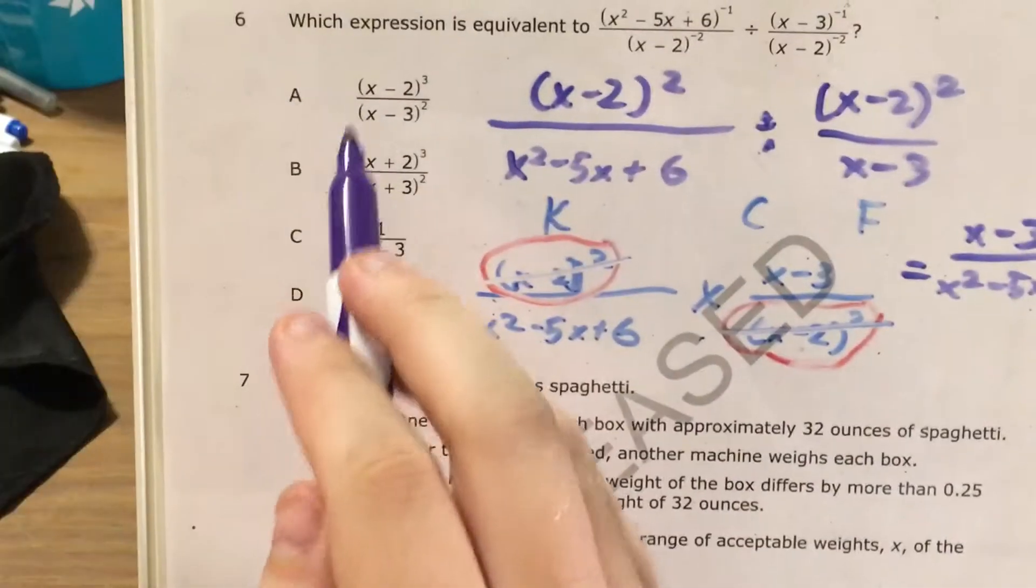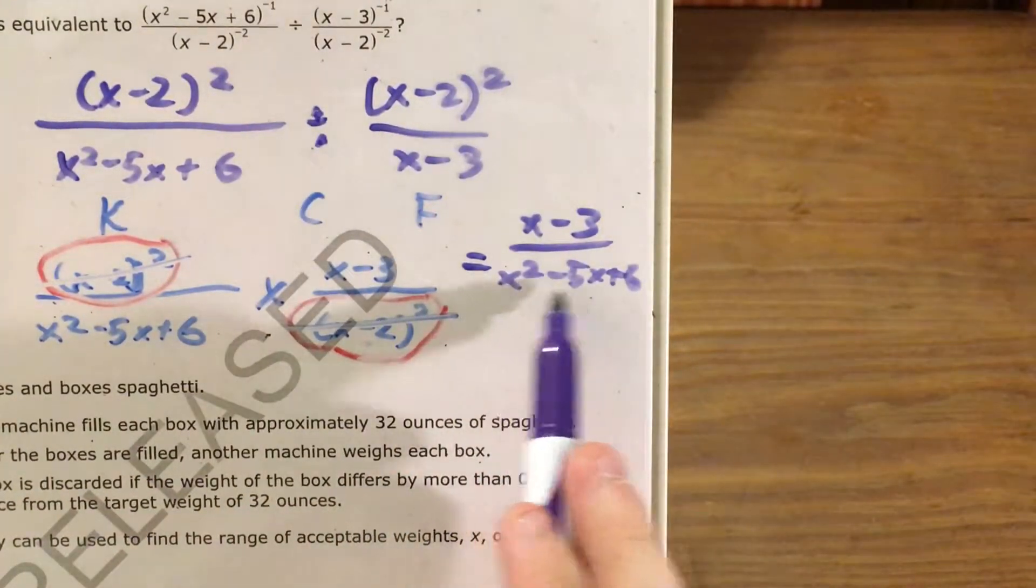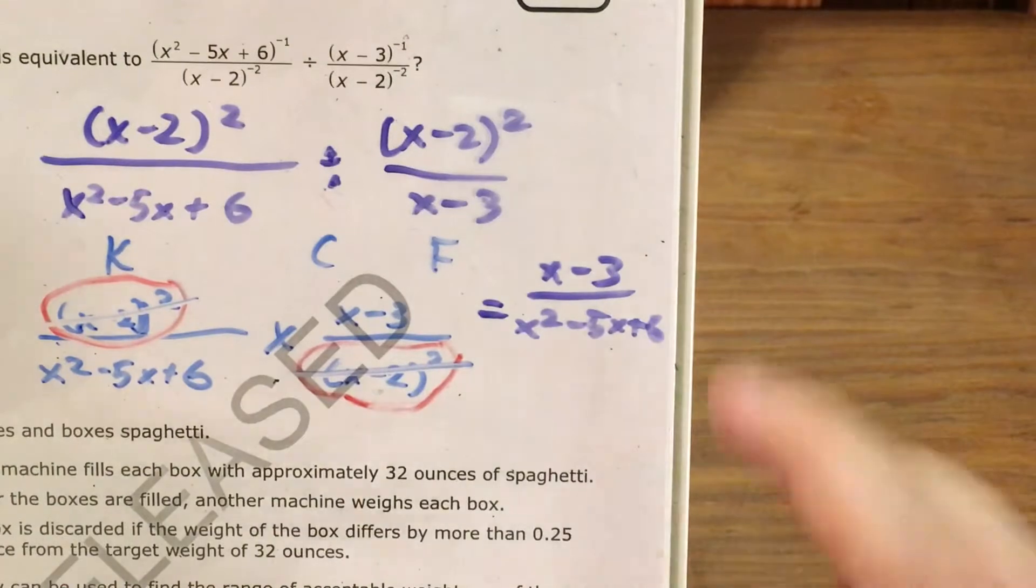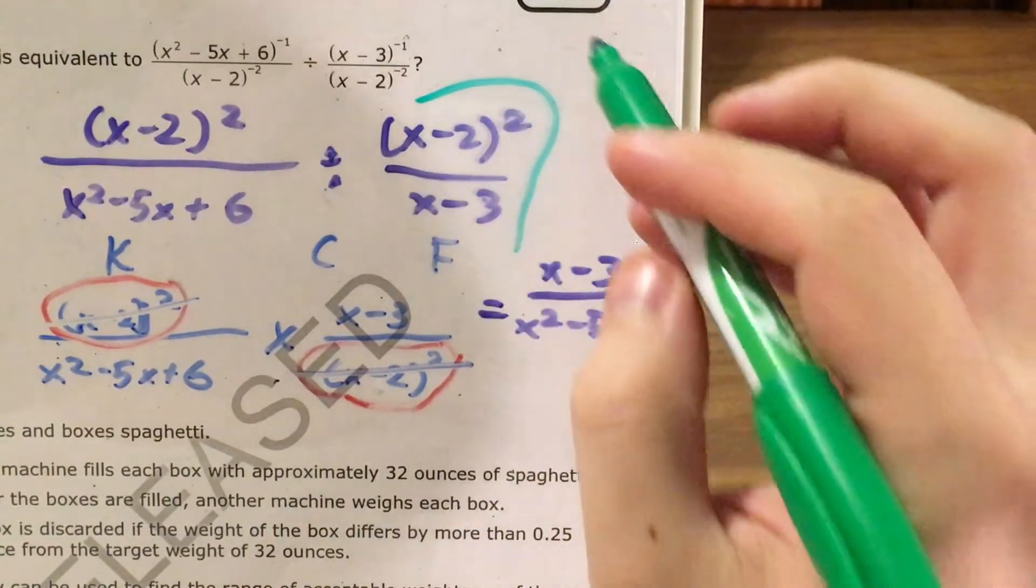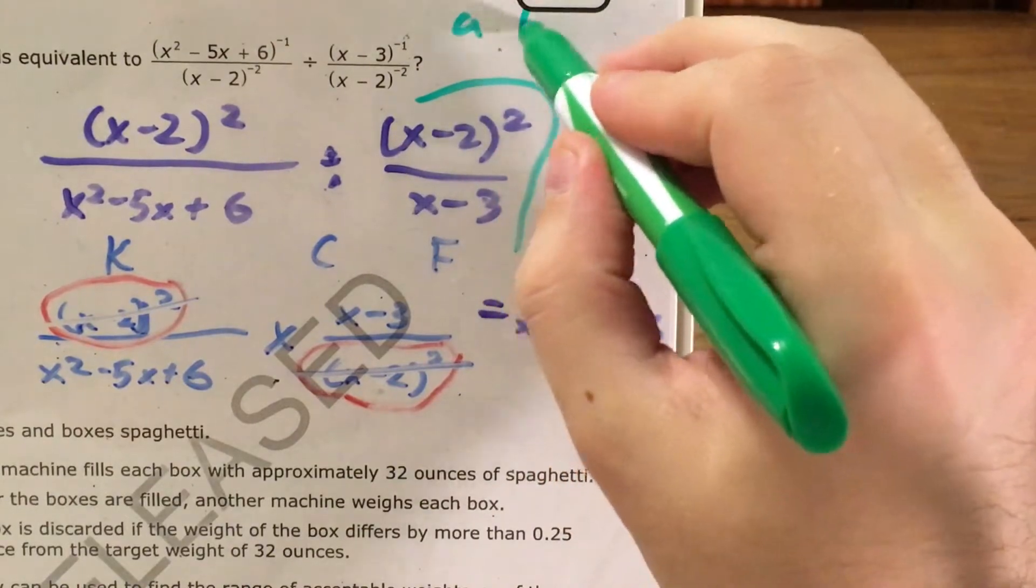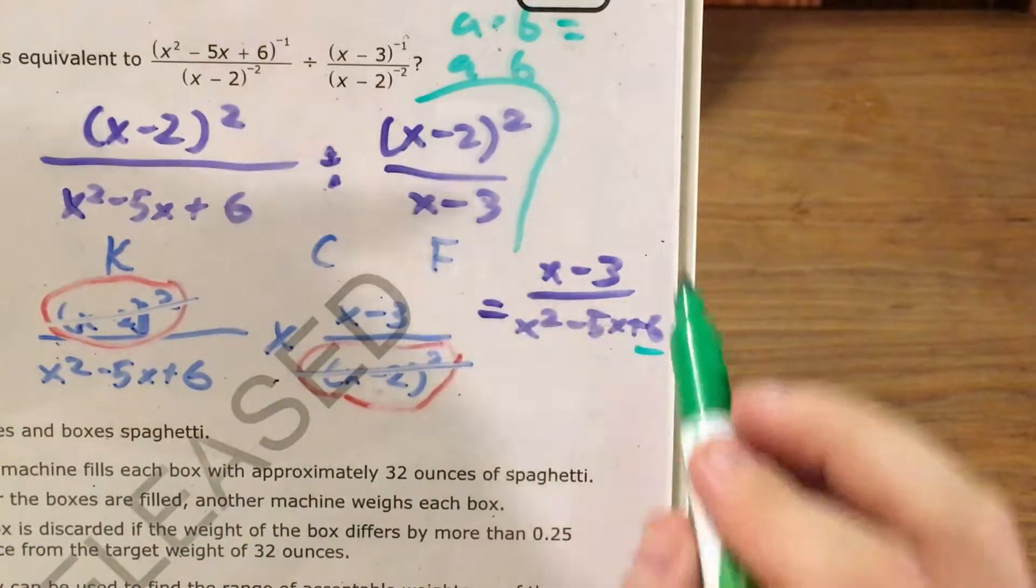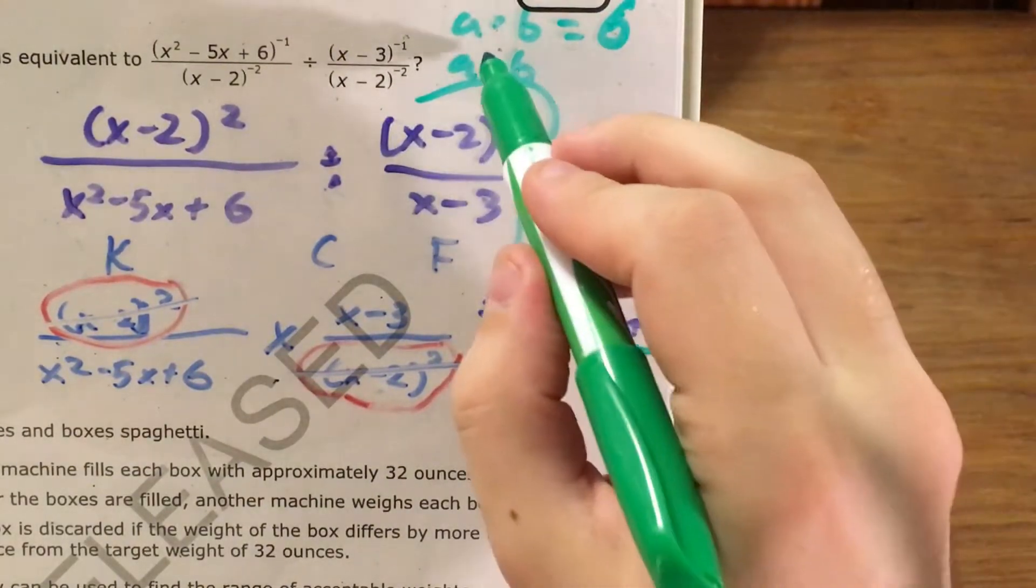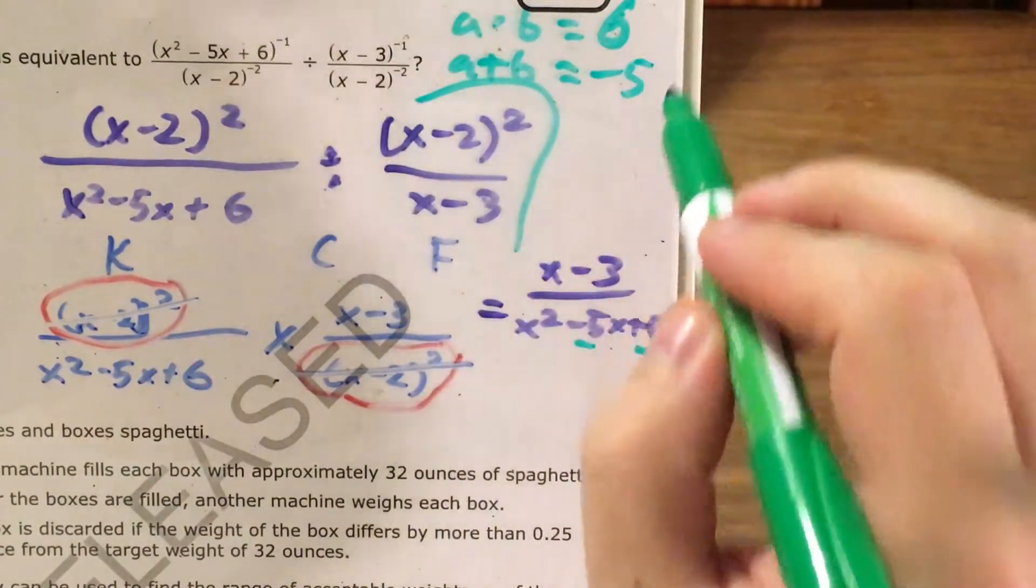Except that doesn't match any of my answer choices. So now I think I need to actually go ahead and factor this x squared minus 5x plus 6. And if you remember how to factor, let me go ahead and break this off, this is when I look for my two magic numbers a and b, where if I multiply them, I get the number on the very end, the constant, 6. And if I add them, I get this number in the middle, the x coefficient, negative 5.